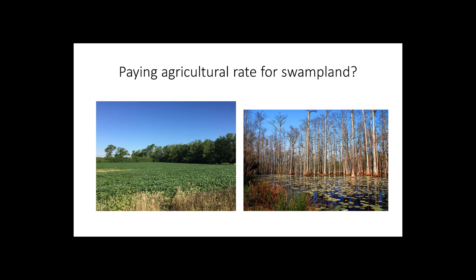In some counties, the tax assessor really has not looked closely at what land is unusable — such as swamp land — or what land is in agricultural or timber use.